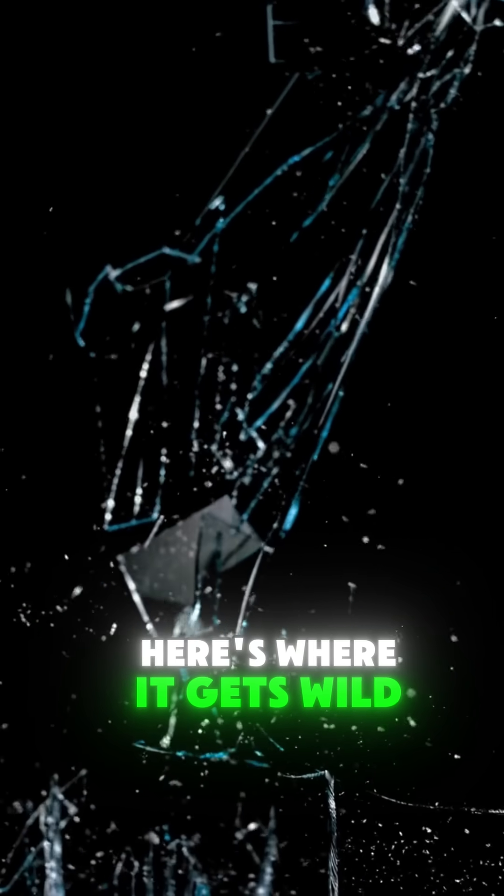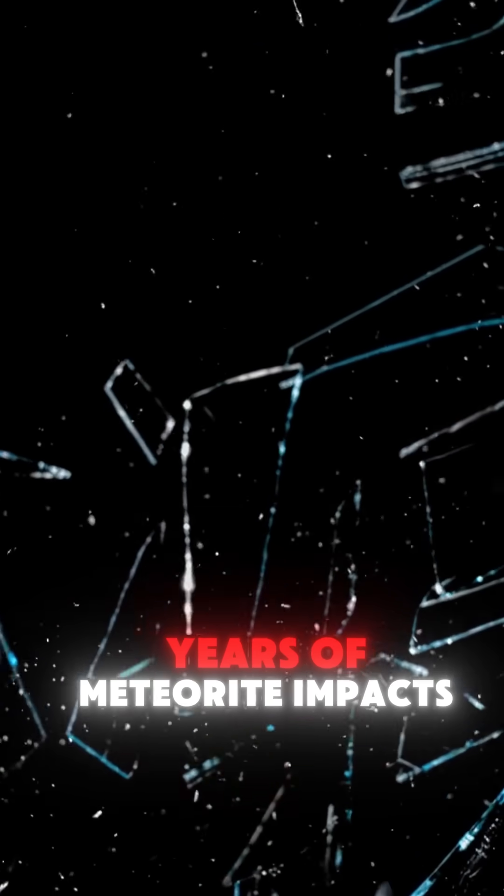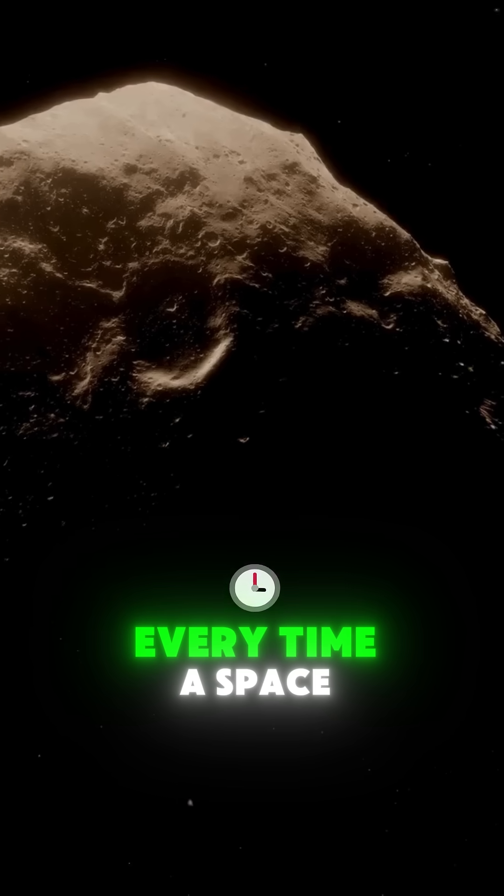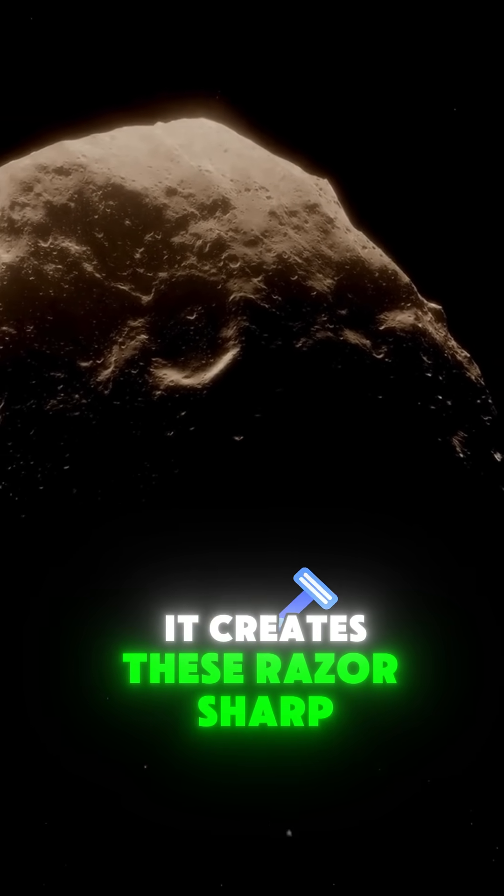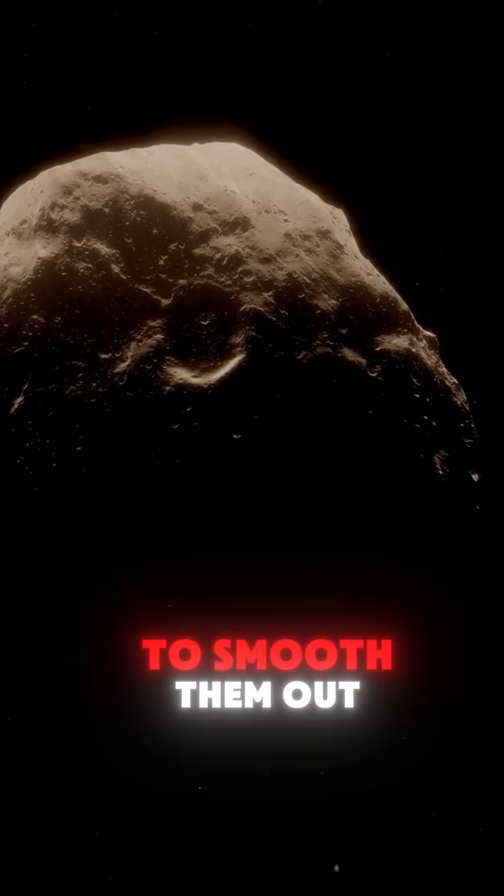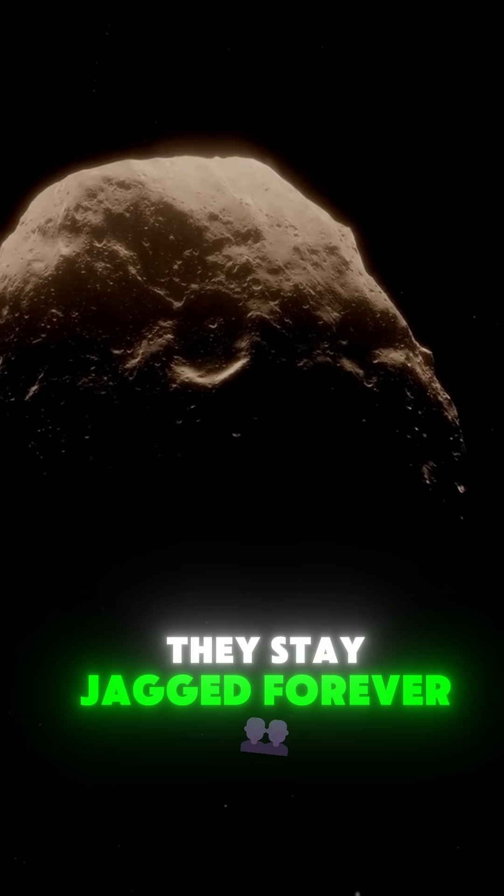Here's where it gets wild. Moon dust is nothing like gunpowder. It's made of tiny glass shards created by billions of years of meteorite impacts. Every time a space rock hits the moon, it creates these razor-sharp glass particles. Without air or water to smooth them out, they stay jagged forever.